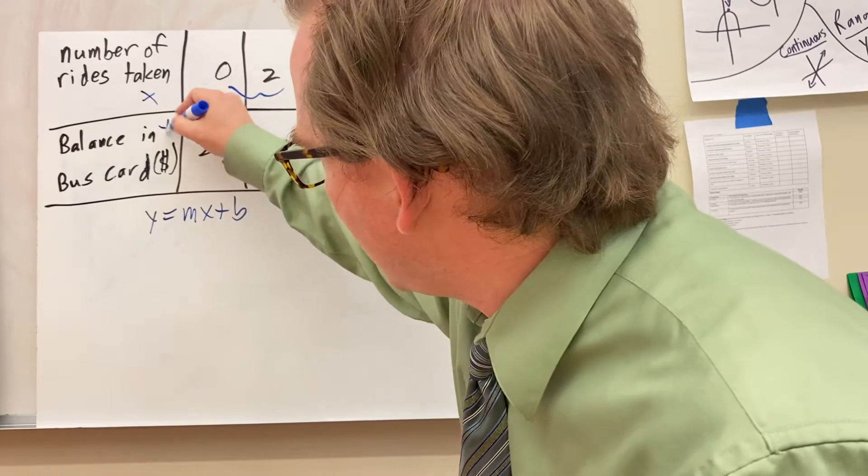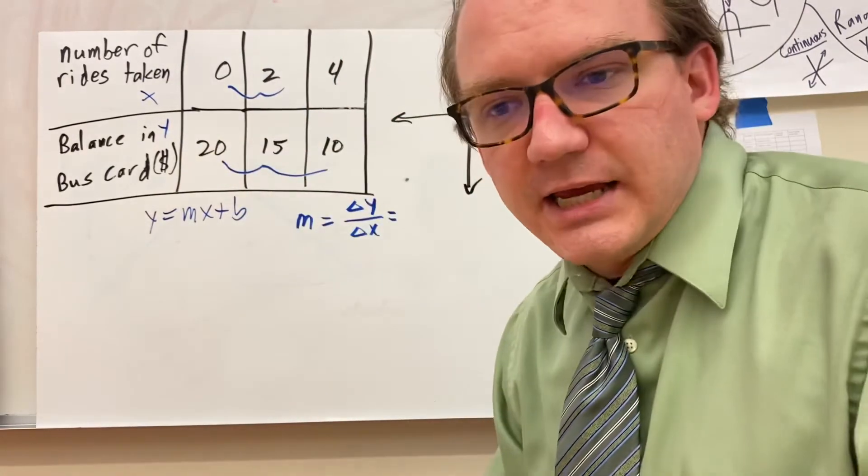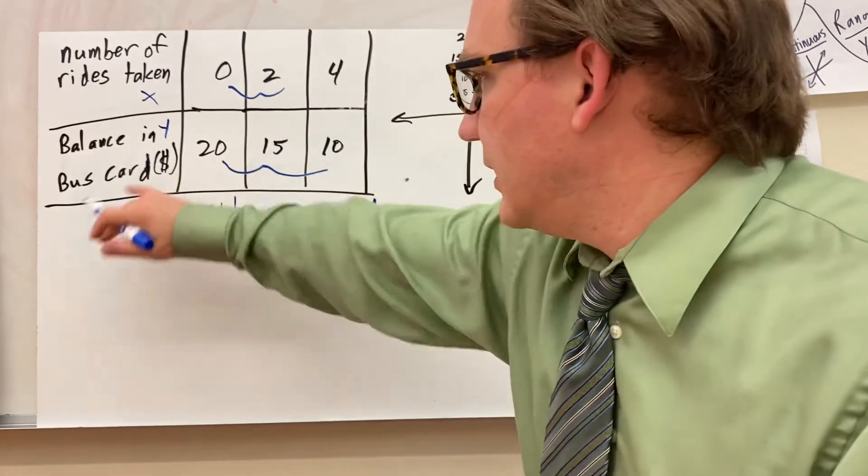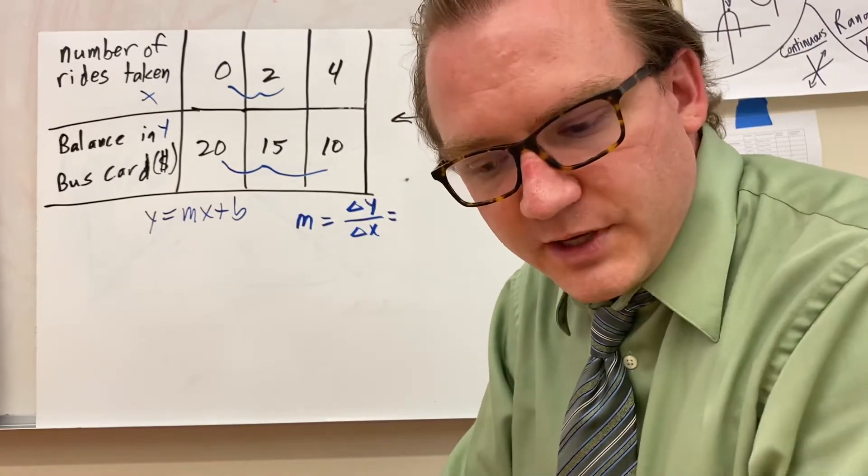So we're going to call this x and this y because number of rides taken is kind of independent, and then the balance on your bus card is dependent on that. That's your dependent variable.